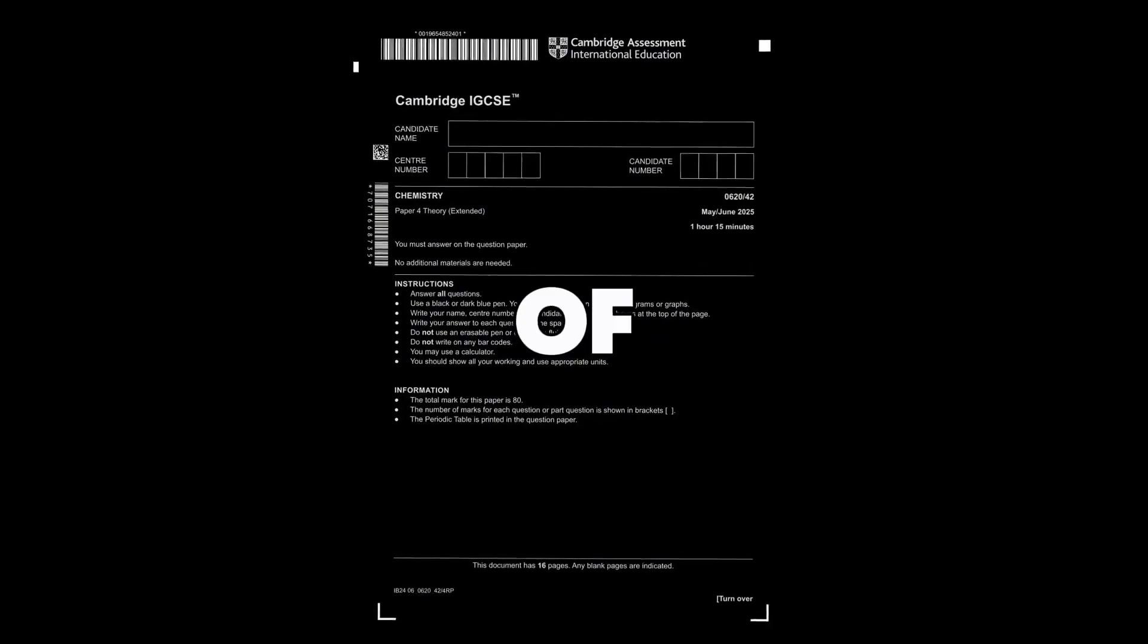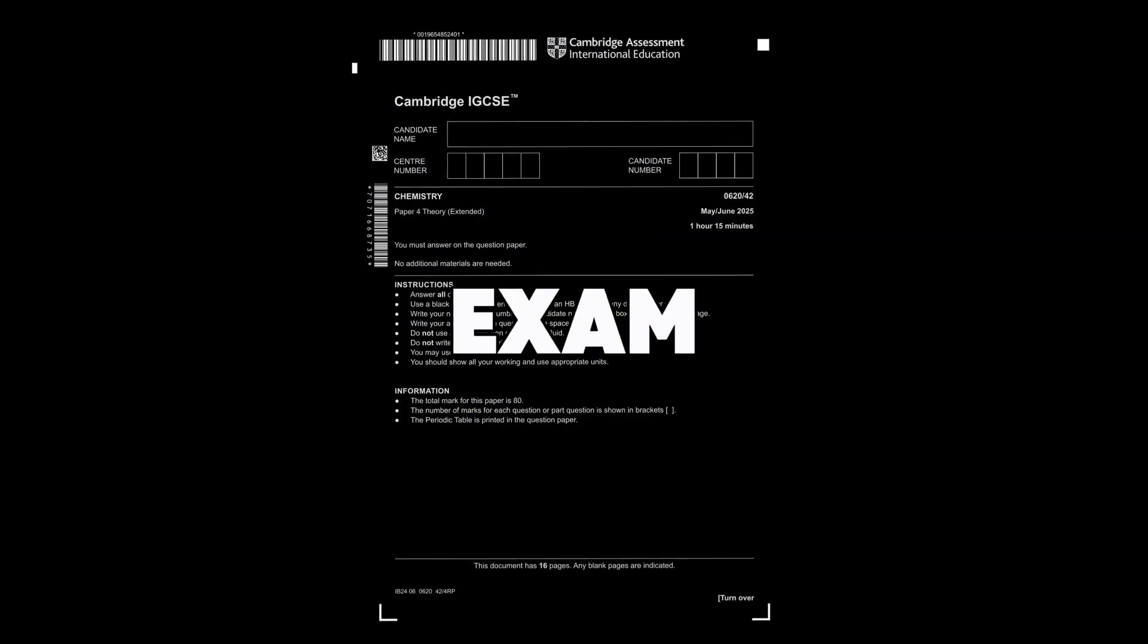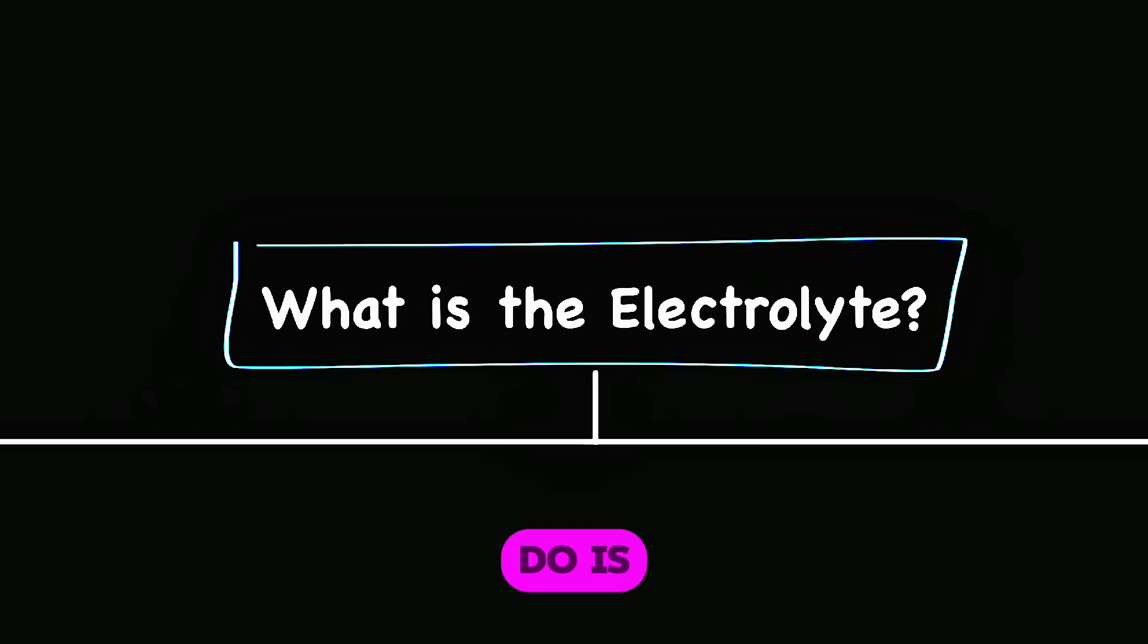This remains one of the most important parts of the IGCSE chemistry exam. You do get a lot of questions asking you to predict the products of electrolysis. The very first thing you should do is to identify the electrolyte.